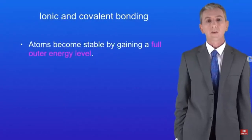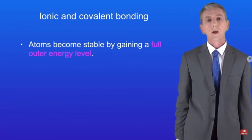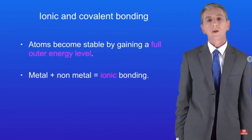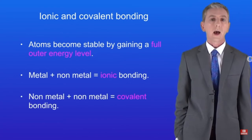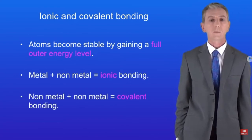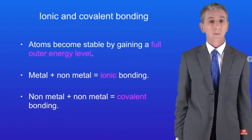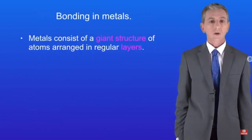In the previous videos we've seen that atoms become stable by gaining a full outer energy level. When a metal atom reacts with a non-metal atom we see ionic bonding, however when two non-metal atoms react we've got covalent bonding. So let's take a look at bonding in metals.